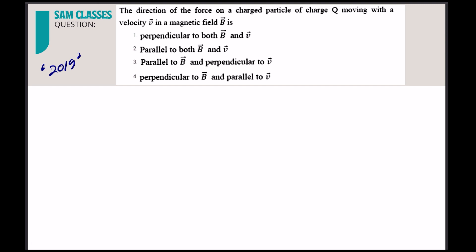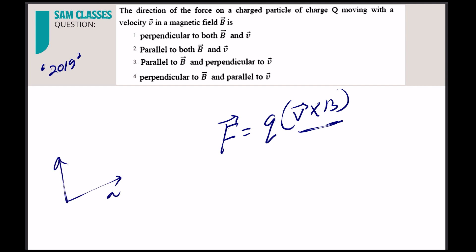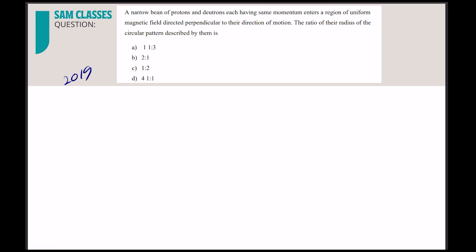The direction of force on a charged particle moving with velocity v in a magnetic field: F = q(v × B). In a cross product, the result is perpendicular to both input vectors. Therefore the force is perpendicular to both the velocity v and the magnetic field B.